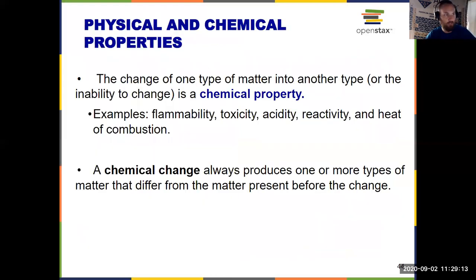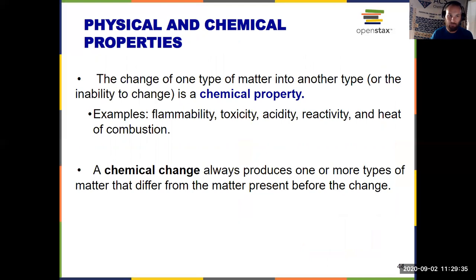The flip side: chemical properties and chemical changes. To identify a chemical property, think about whether there's some sort of change in the chemical composition — did it change to a different chemical identity? Flammability: if you burn something, you can't get that fire back easily; you changed the chemical composition. That is a chemical property. Toxicity is another one — it has to undergo a reaction inside your body to be toxic. Acidity, any sort of chemical reaction, reactivity, and heat of combustion — just like flammability, if something's combusting.